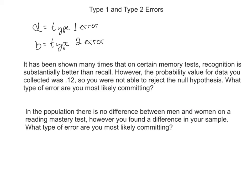So let's go through these next scenarios here and let's see what kind of error we might be committing. It's been shown many times that on certain memory tests, recognition is substantially better than recall. However, the probability value for the data that you collected was 0.12, so you're not able to really reject that null hypothesis.